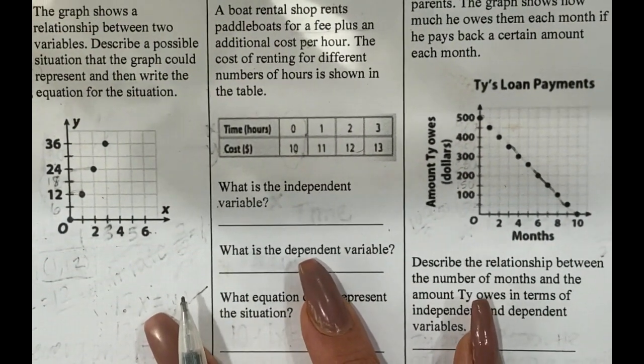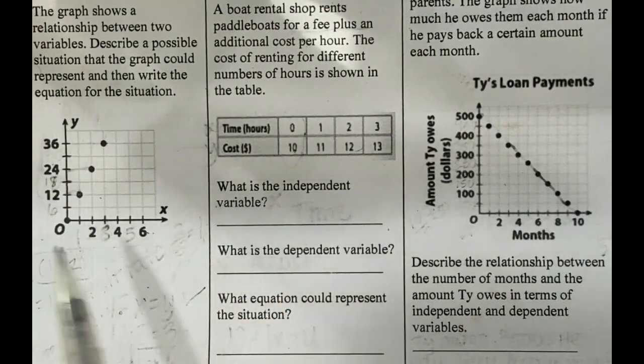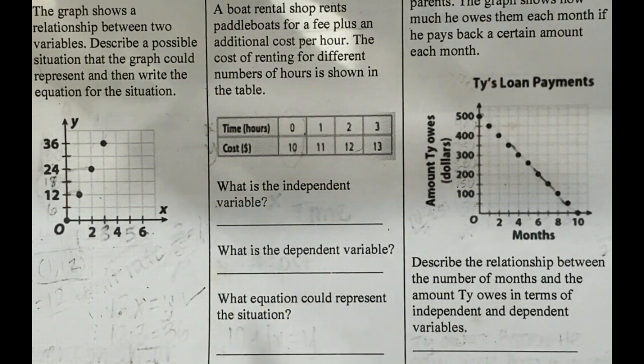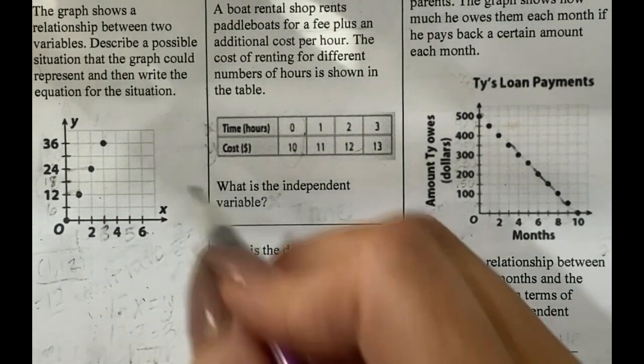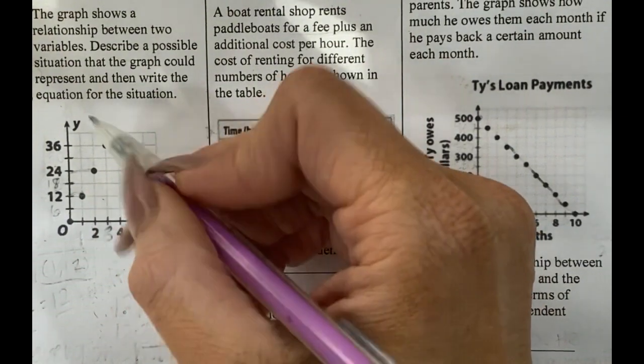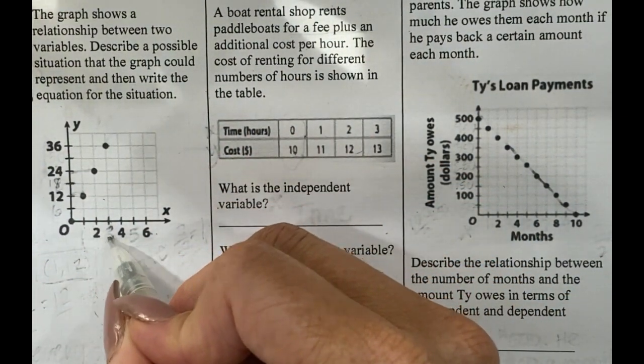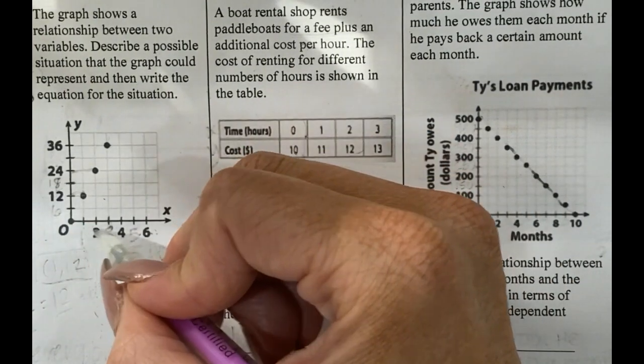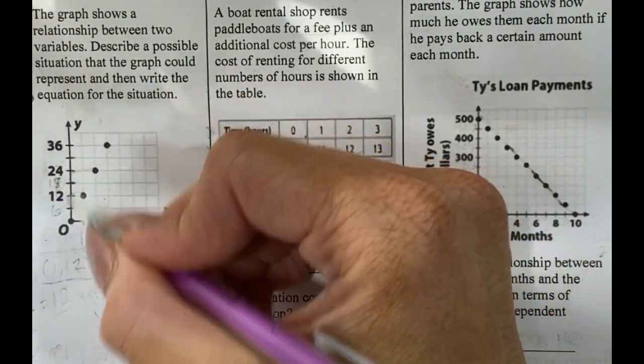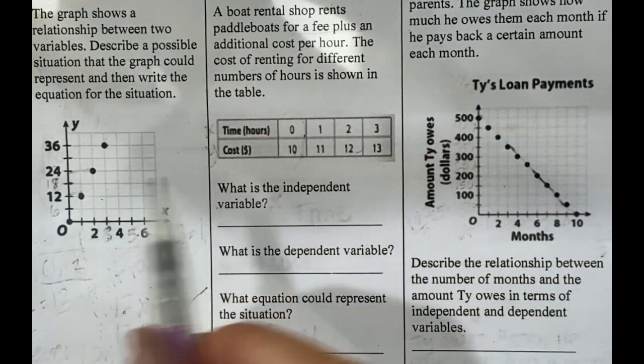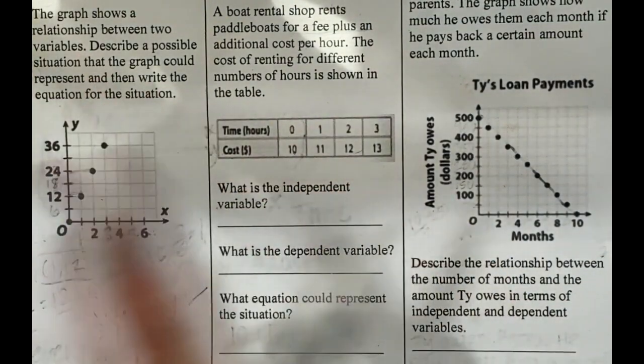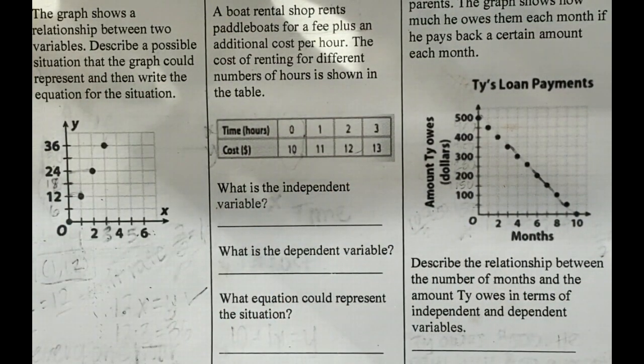Okay, so it says the graph shows a relationship between two variables. Describe a possible situation that the graph could represent and then write the equation for the situation. Okay, so two things that we have to do. So the first thing that I always look at when I am given either a graph or a table is to make sure that I can read it properly.